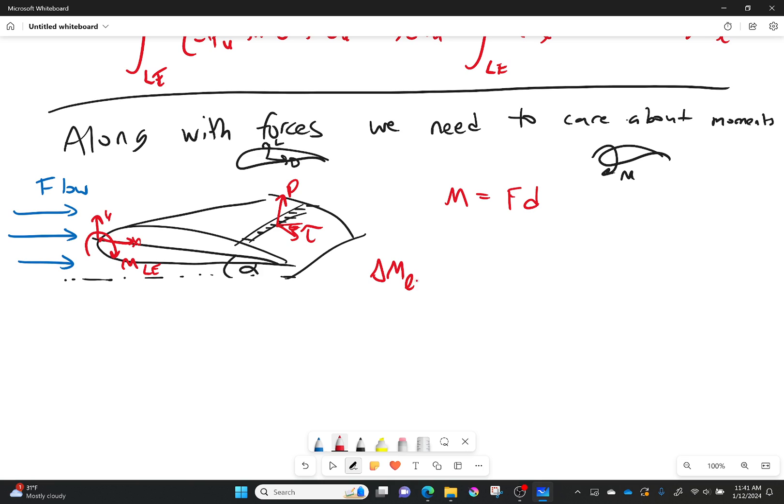So ΔM leading edge—there we go, leading edge. Then we're doing this prime, so we're doing it per unit span. And this is for the upper surface. It's going to be equal to my pressure on the upper surface in that segment times cos θ plus the shear stress on the upper surface in that segment times sin θ times the width of the segment times x.